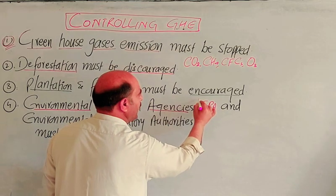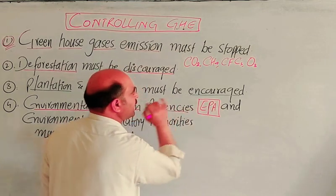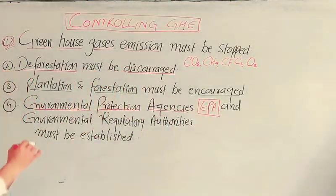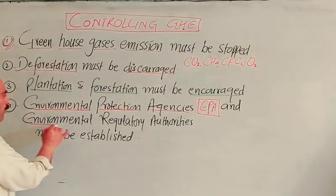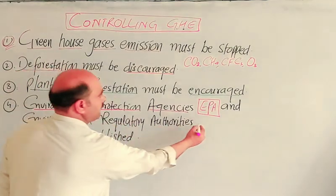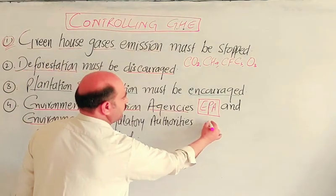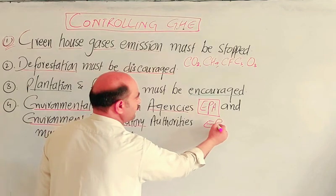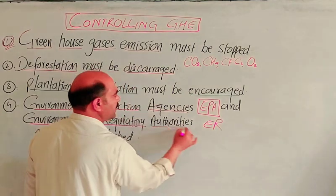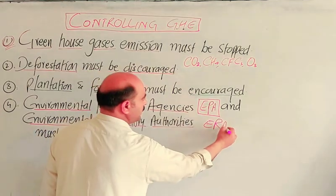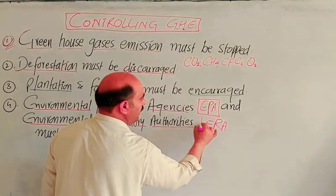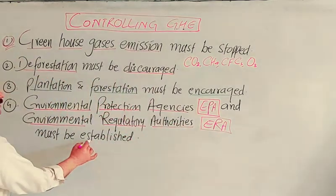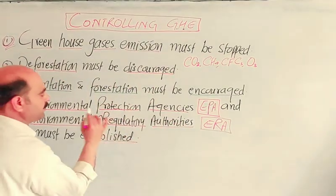Environmental Protection Agencies (EPA) and Environmental Regulatory Authorities (ERA) must be established. These regulatory bodies are necessary to protect the environment, regulate greenhouse gas emissions, and ensure that power stations and industries operate within balanced and lawful environmental standards.